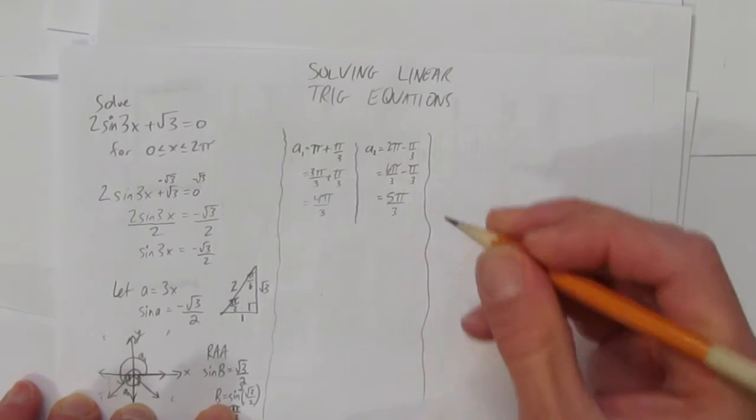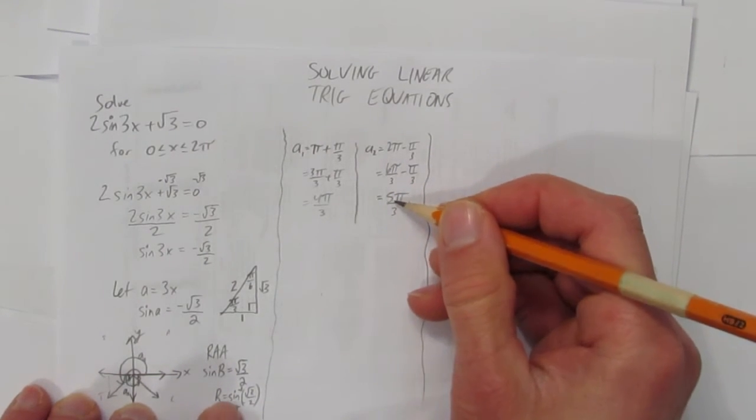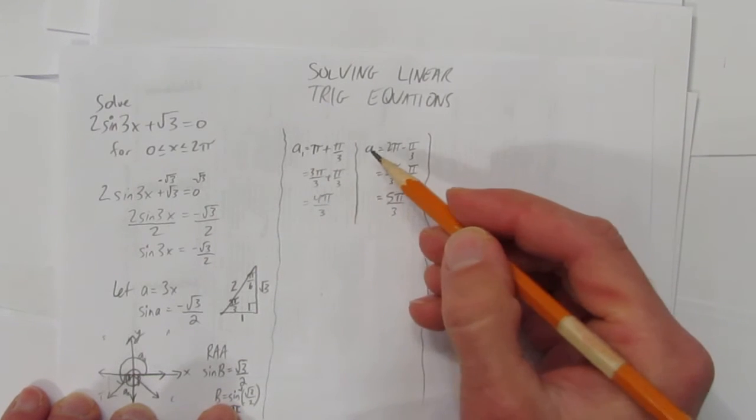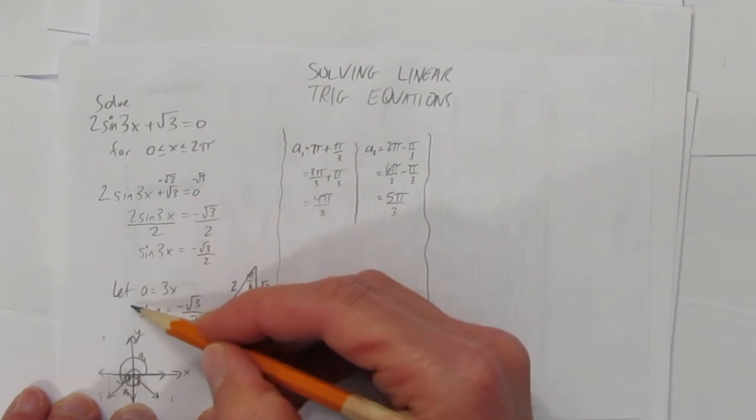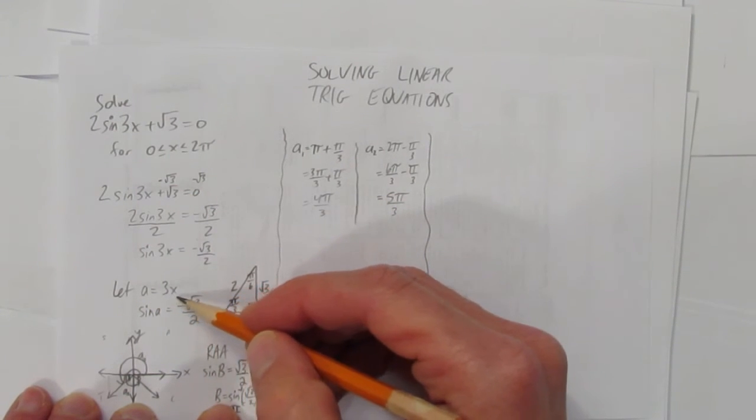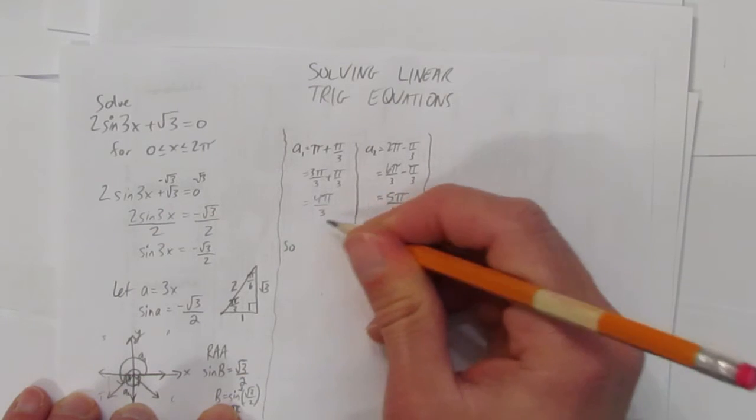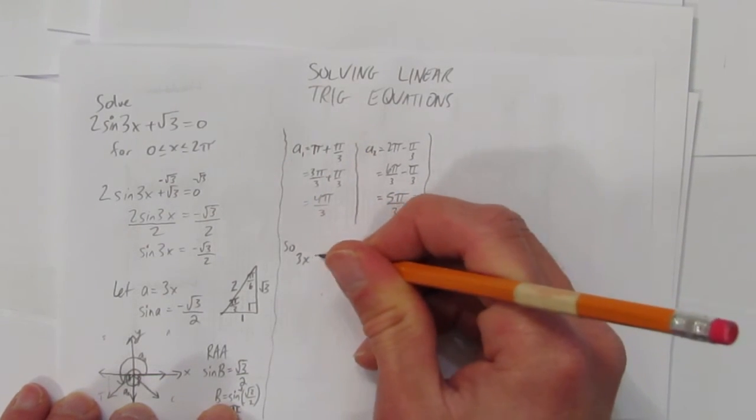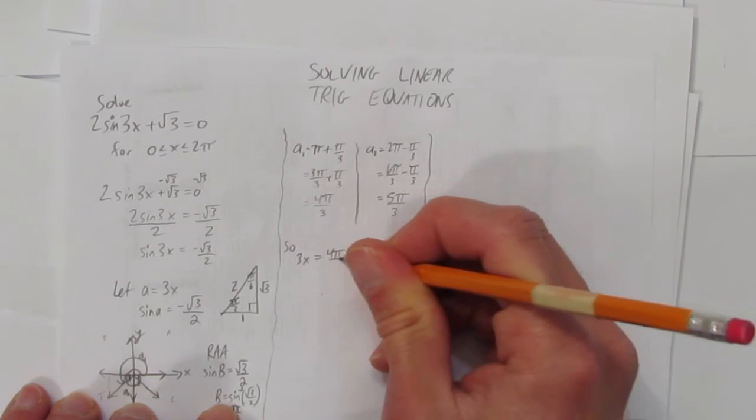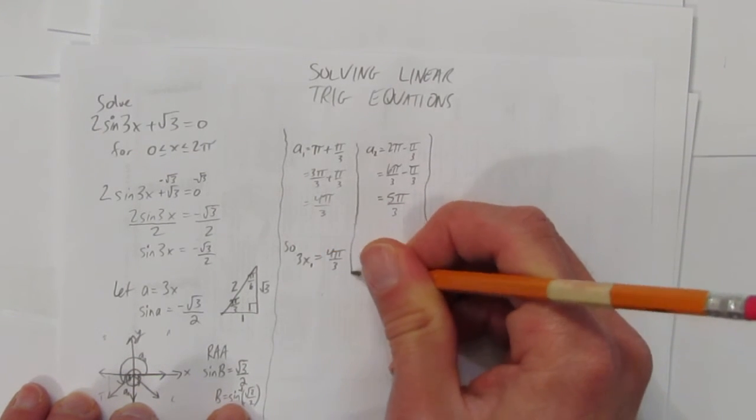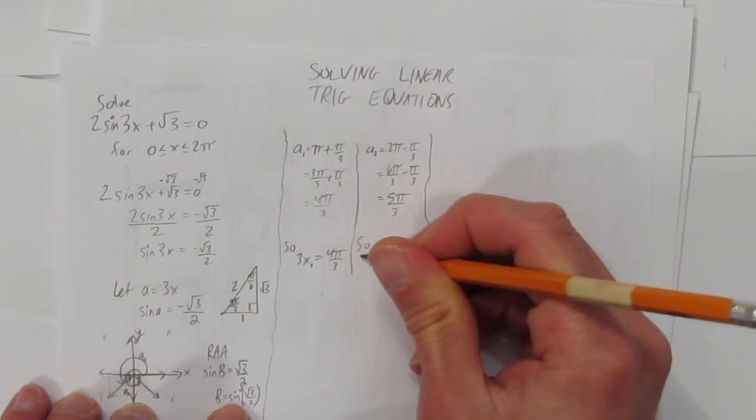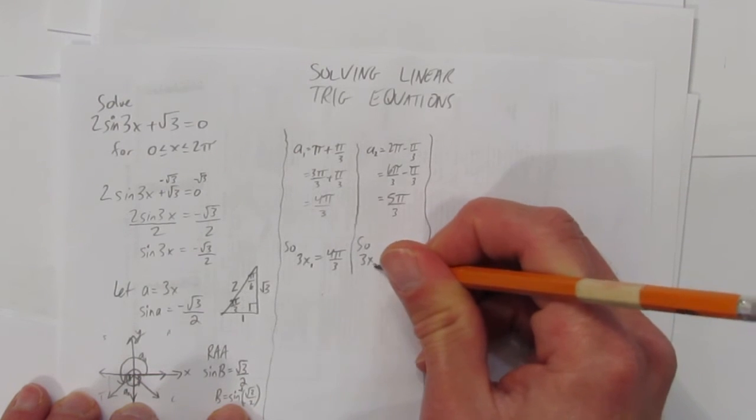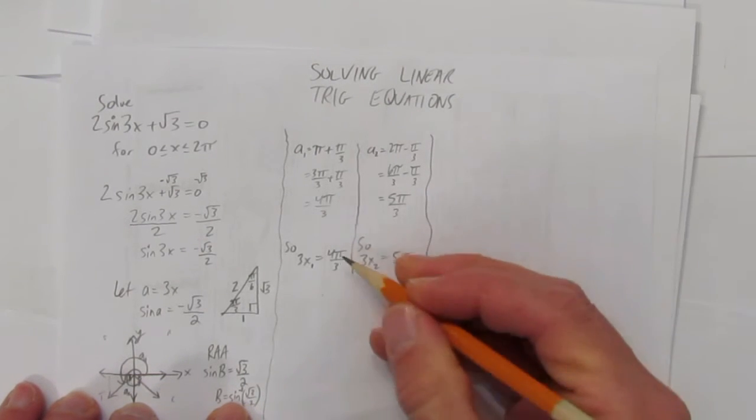So far so good. We're getting somewhere now. We have these rotations, but we actually haven't solved for x. We've solved for a, which is good, but we're not quite there yet. We have to remember that at some point we let a represent 3x. So we know that this a1 corresponds to 3x really equaling 4π/3. And let's call this x, x1. Same thing for this solution here. This x equals 5π/3, and let's call this x2.